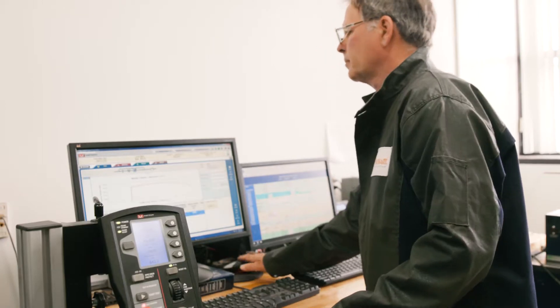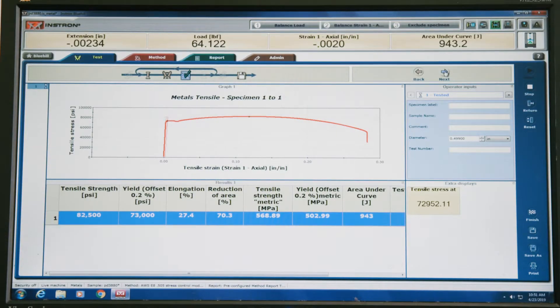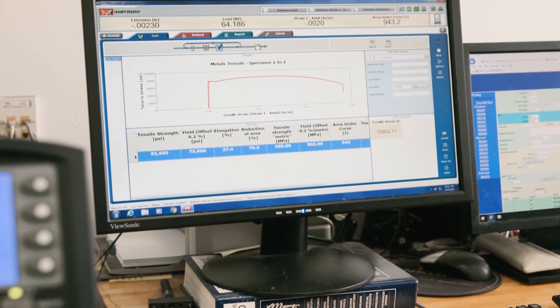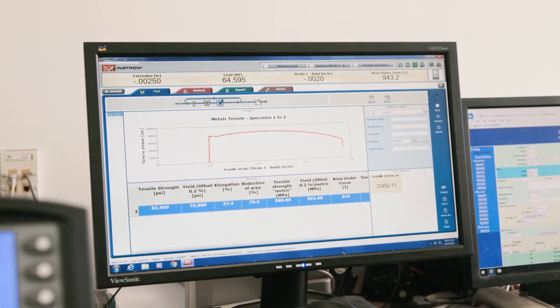During testing, software generates a graph that shows stress on the y-axis and strain on the x-axis. The curve shown is an engineering stress-strain curve. Ultimate tensile strength is the maximum stress that the material was able to withstand.